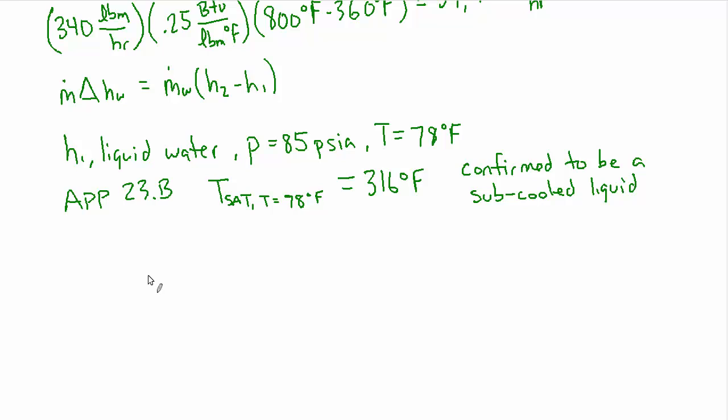And it equals 316 degrees. Obviously we're far below that at 78. So we know that this is definitely a sub cooled liquid. So how do we actually look up the enthalpy? We now want to turn to the other steam table, which is app 23 A. And we're going to look at the column that shows H sub F because it's liquid water. So H sub F at T equals 78 degrees, since this table is organized by temperature, equals 46.07 BTU per pound. So that gives us H1.